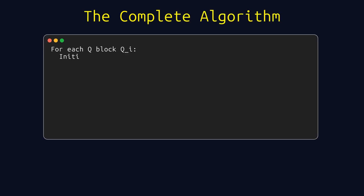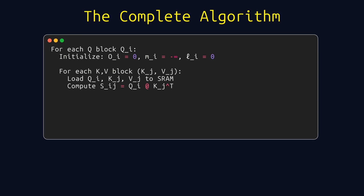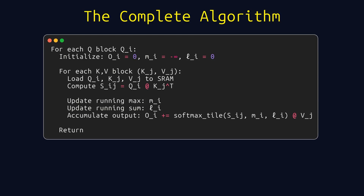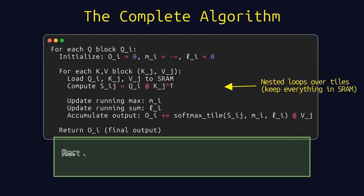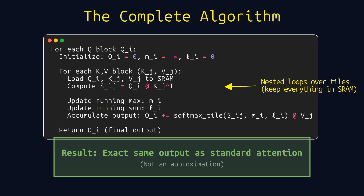Let's put it all together and walk through the algorithm. Outer loop: iterate over blocks of Q. For each Q block, initialize the output, the running max, and the running sum. Inner loop: iterate over blocks of K and V. Load Q, K, and V into SRAM. Compute the attention scores for this tile, update the running max and sum, and accumulate the output. All the attention computation — the matrix multiply, the softmax, the final multiply — happens entirely in SRAM. We only read Q, K, and V from HBM once, and we only write the output once. And here's the important part: this is exact. It produces bit-identical results to standard attention.